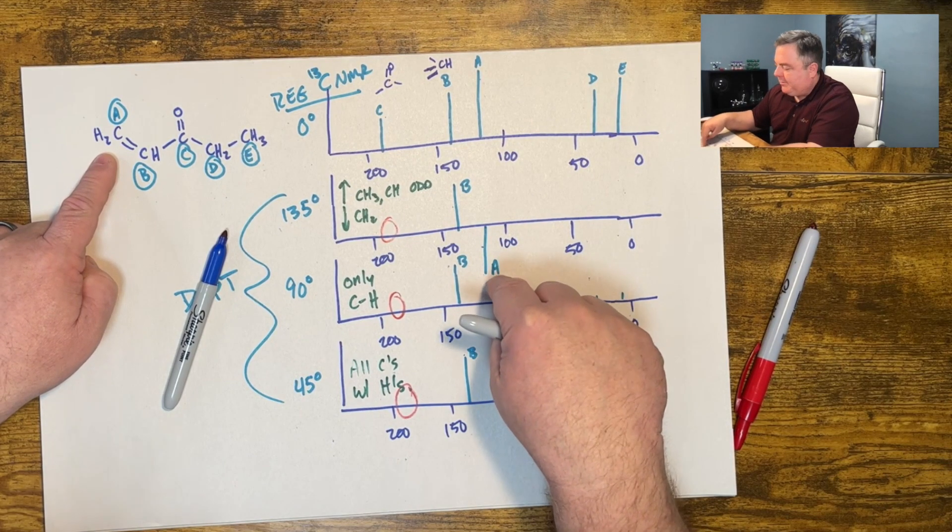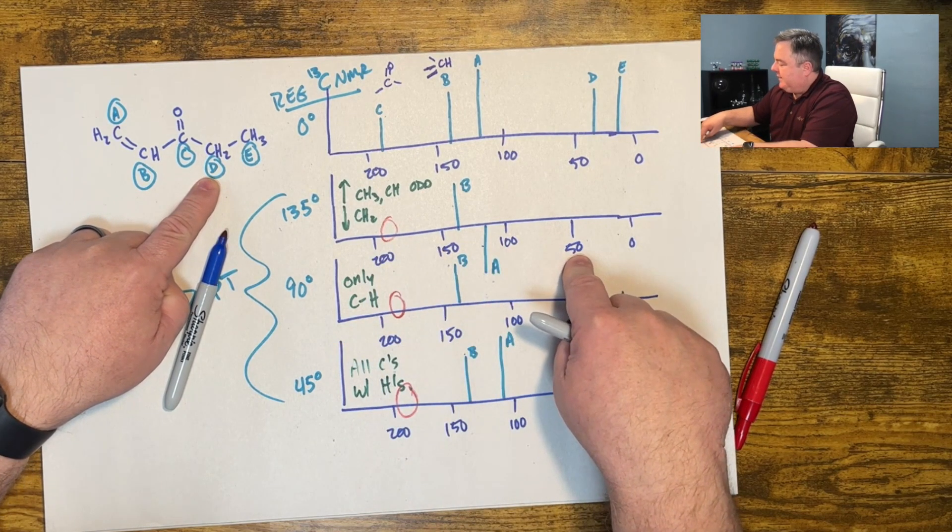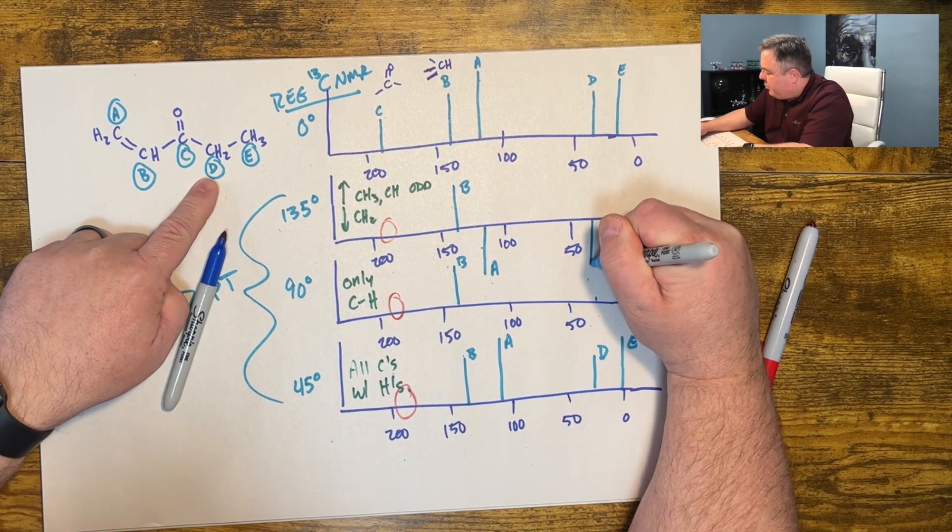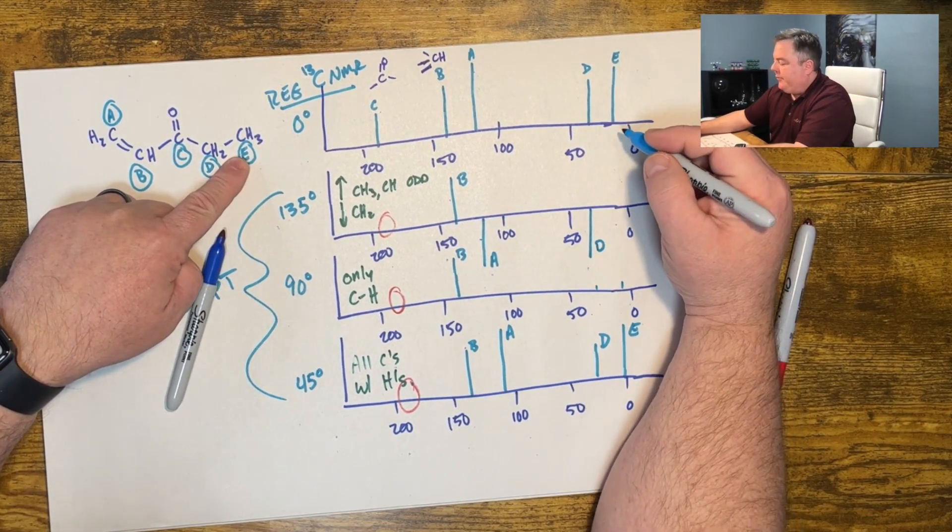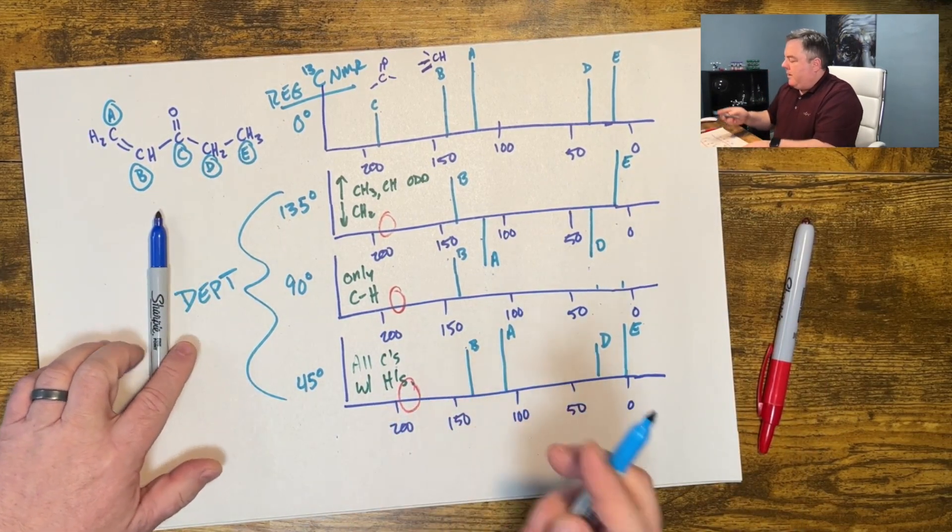If it points down below the spectrum, that's a CH2. C doesn't show up, no hydrogens. D CH2, which way do you think it points? Down below, that's right. And E CH3, odd number of hydrogens, it points up.